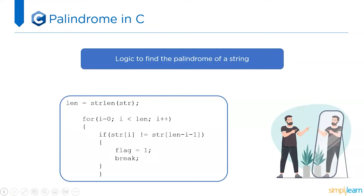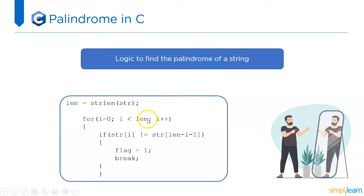Now let's understand the logic to find the palindrome of a string. Previously we saw palindrome of a number; now we are going to enter a string. Whatever string we enter, we find its length using the strlen function, and that length is stored in the len variable. Then, for i equal to 0 to i less than n, it checks if the character at string[i] — the first character — is not equal to the last character of the string, and if so, it breaks, meaning it is not a palindrome.